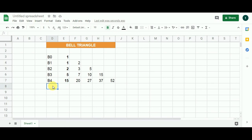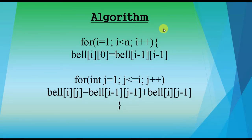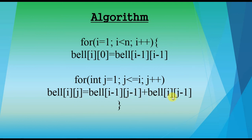Now let's look at the algorithm. Bell[i][0] = Bell[i-1][i-1], which describes how we copy the last value of the previous row into the leftmost cell of the current row. For subsequent cells: Bell[i][j] = Bell[i-1][j-1] + Bell[i][j-1], meaning we sum the value diagonally above-left and the value immediately to the left.